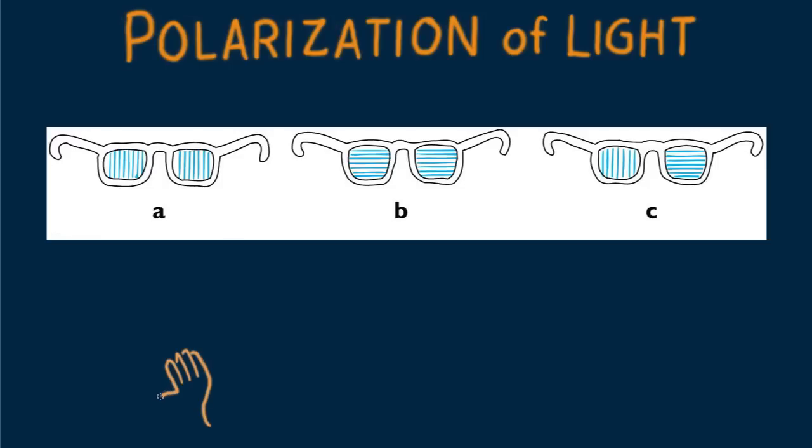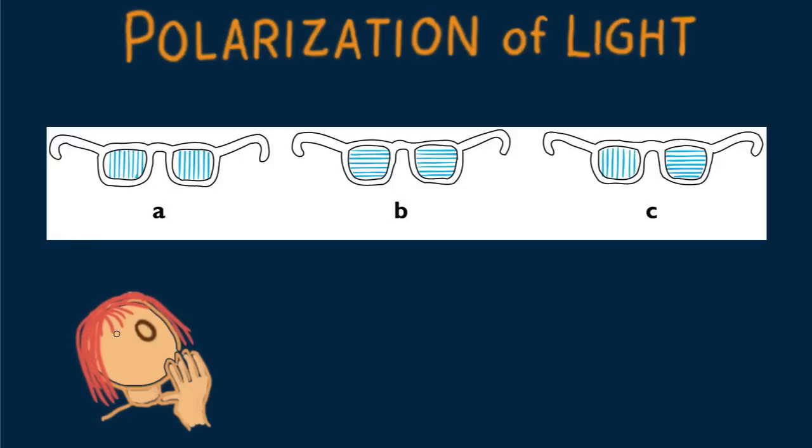I want to leave you with a question. First, little Nellie Newton wants to get the best sunglasses for automobile driving. She sees three sets of polarized sunglasses with polarization axes indicated by the straight lines. Which pair of eyeglasses is best suited for Nellie while driving? A, B, or C? Think about that.